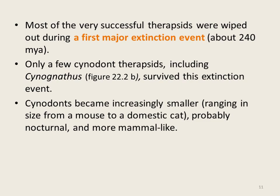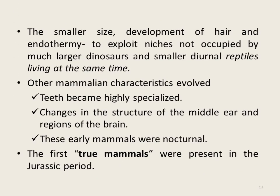Surviving cynodont therapsids became increasingly smaller in size and became nocturnal — mostly active during the night — and started adapting more like mammals. Adaptations like smaller size, hair development, and endothermy allowed these therapsids to exploit niches that larger reptiles and diurnal reptiles had not occupied. Mammalian characteristics evolved further during the Jurassic period, including specialization of teeth to facilitate rapid food processing and changes in the structure of the middle ear and brain regions devoted to hearing and olfaction.